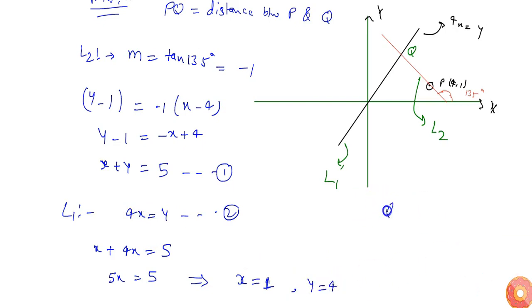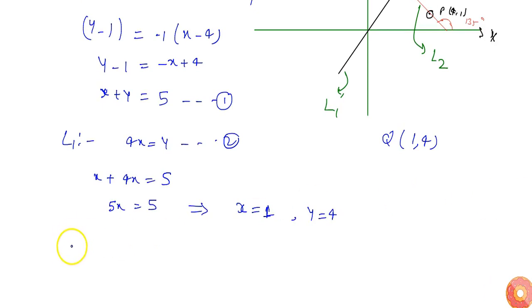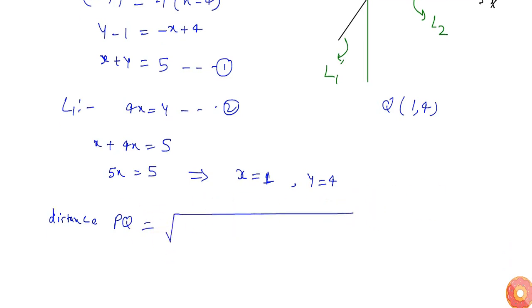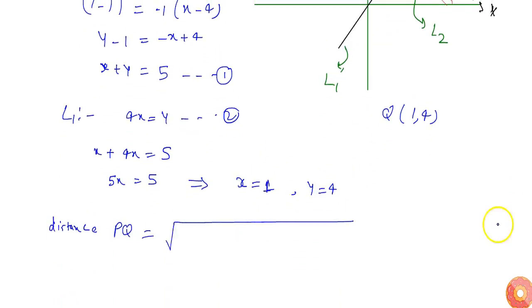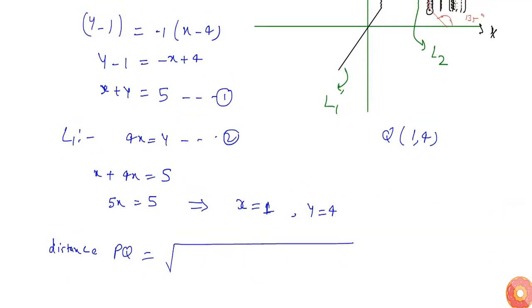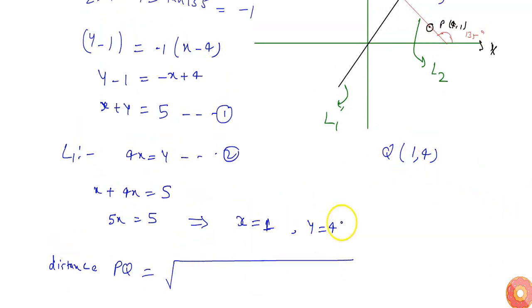So coordinates of Q will be (1, 4). Now the distance which needs to be determined is distance PQ. We can use the distance formula between two points, which is x2 minus x1, so 4 minus 1 whole square.